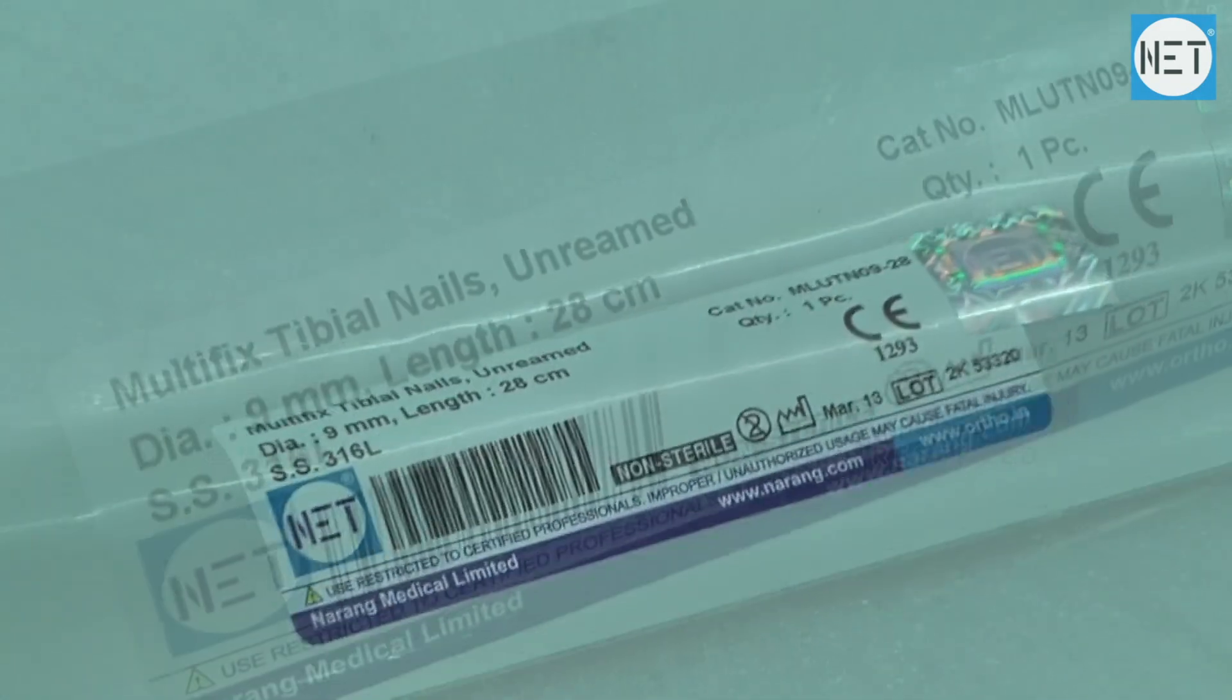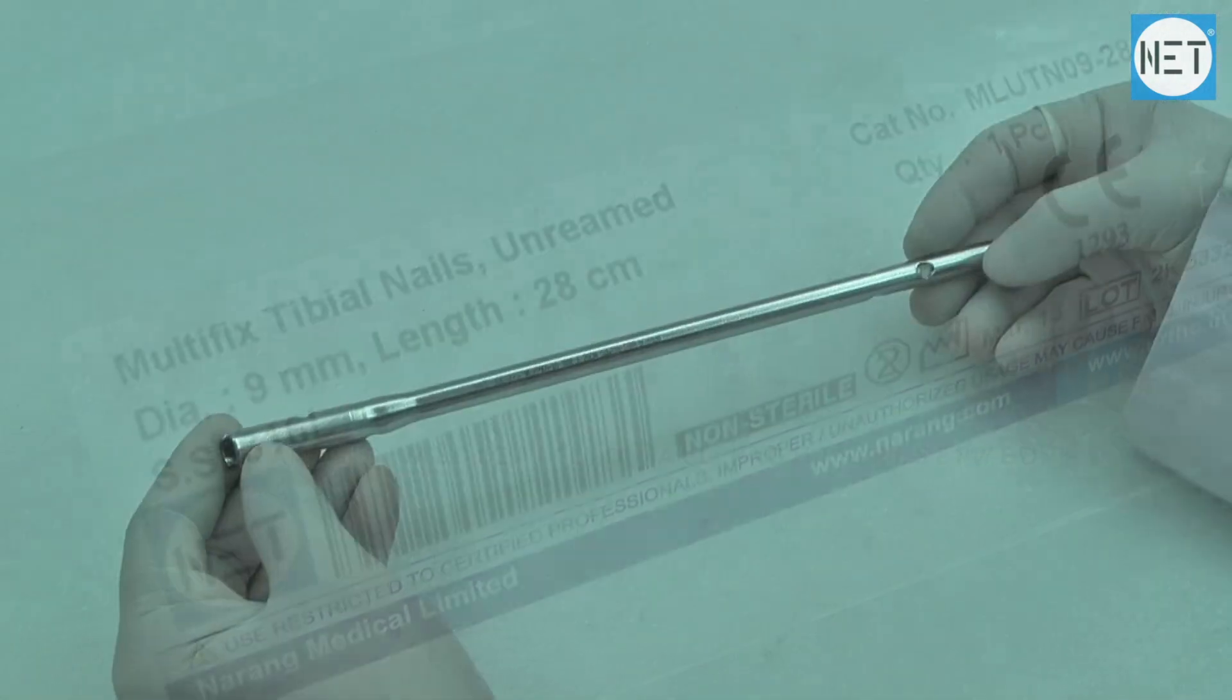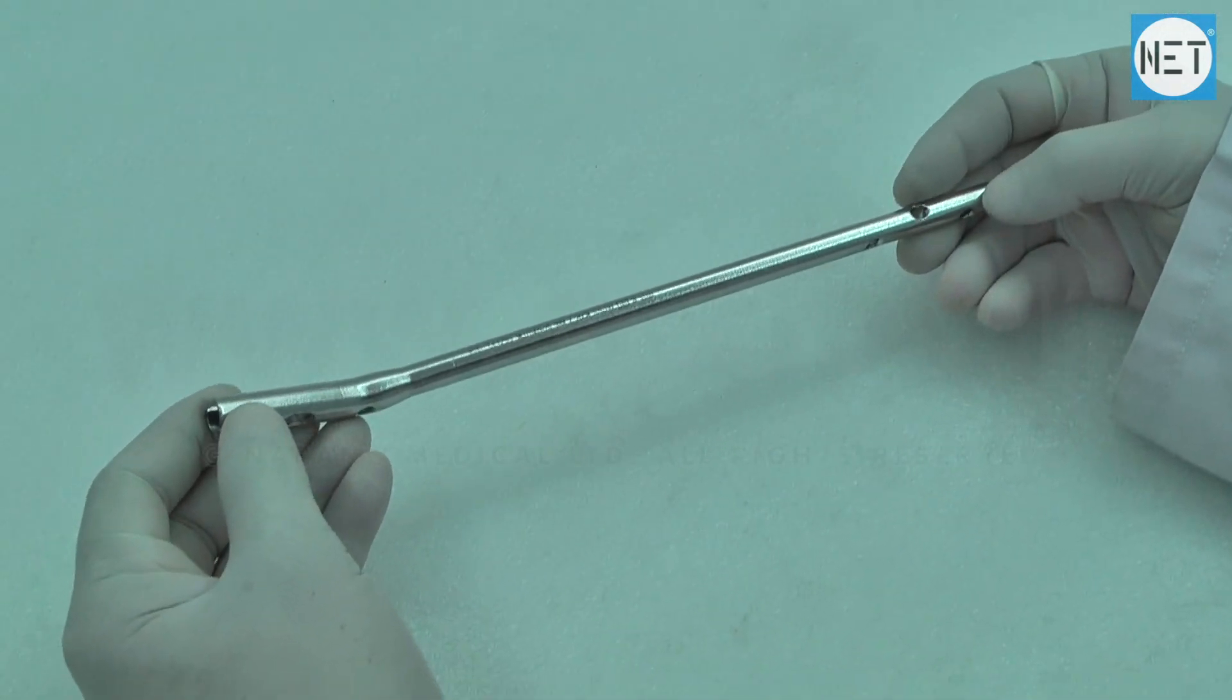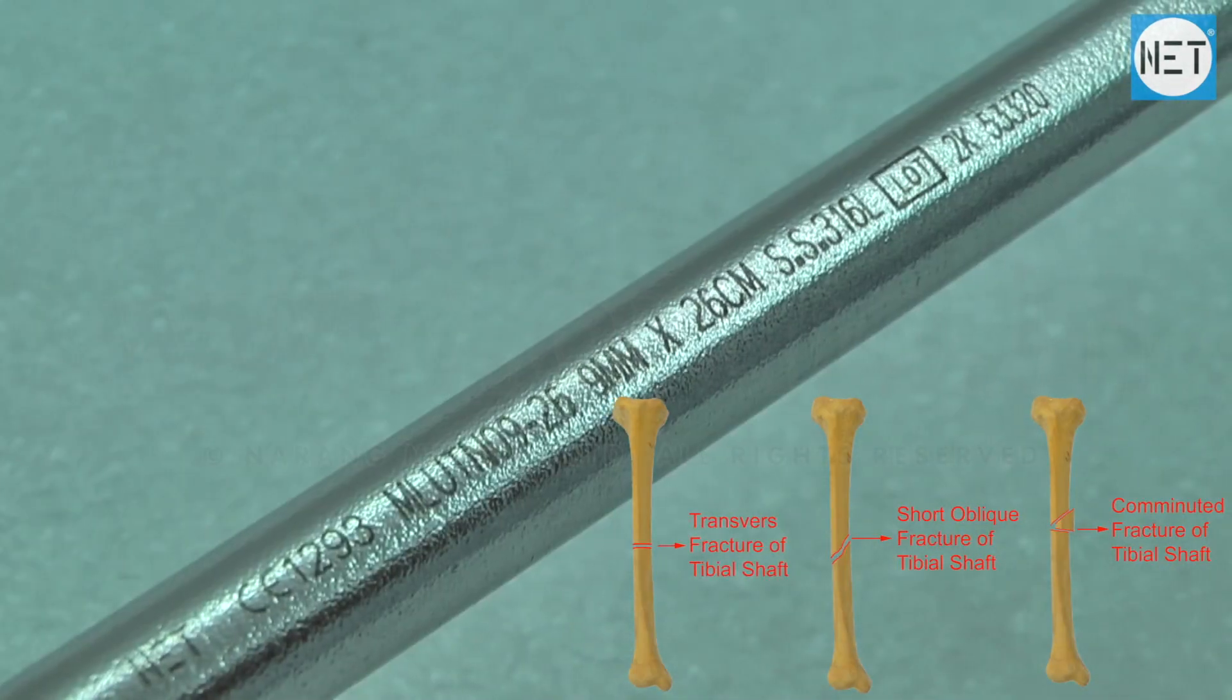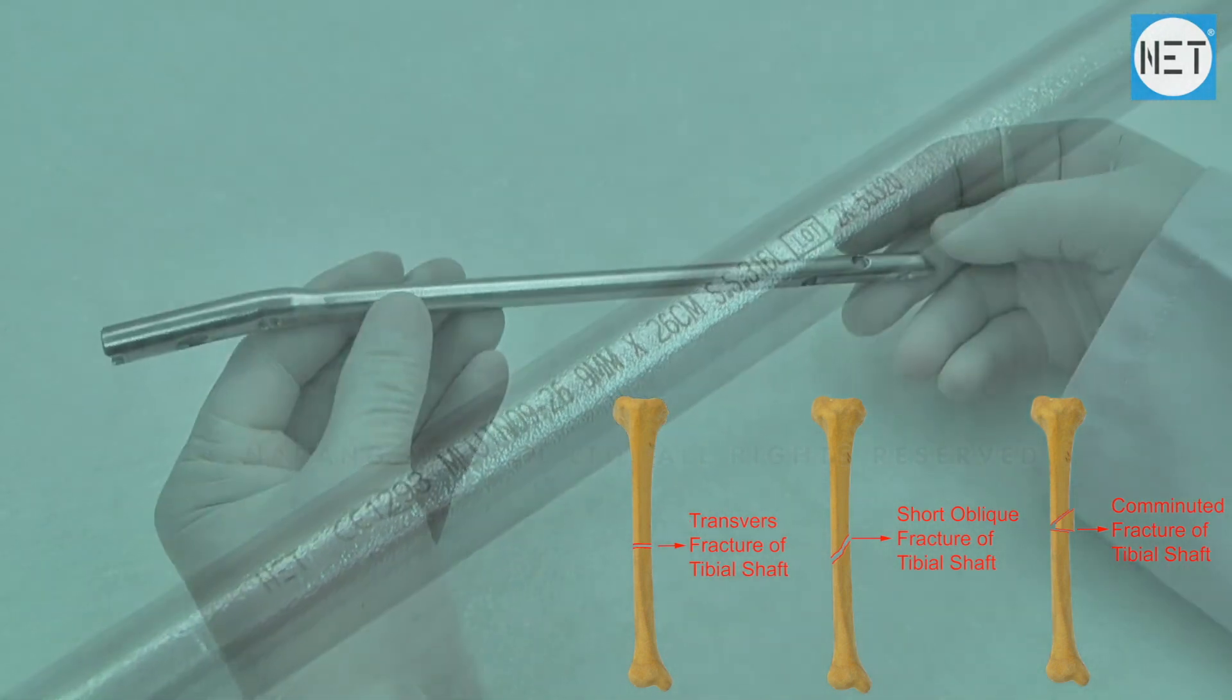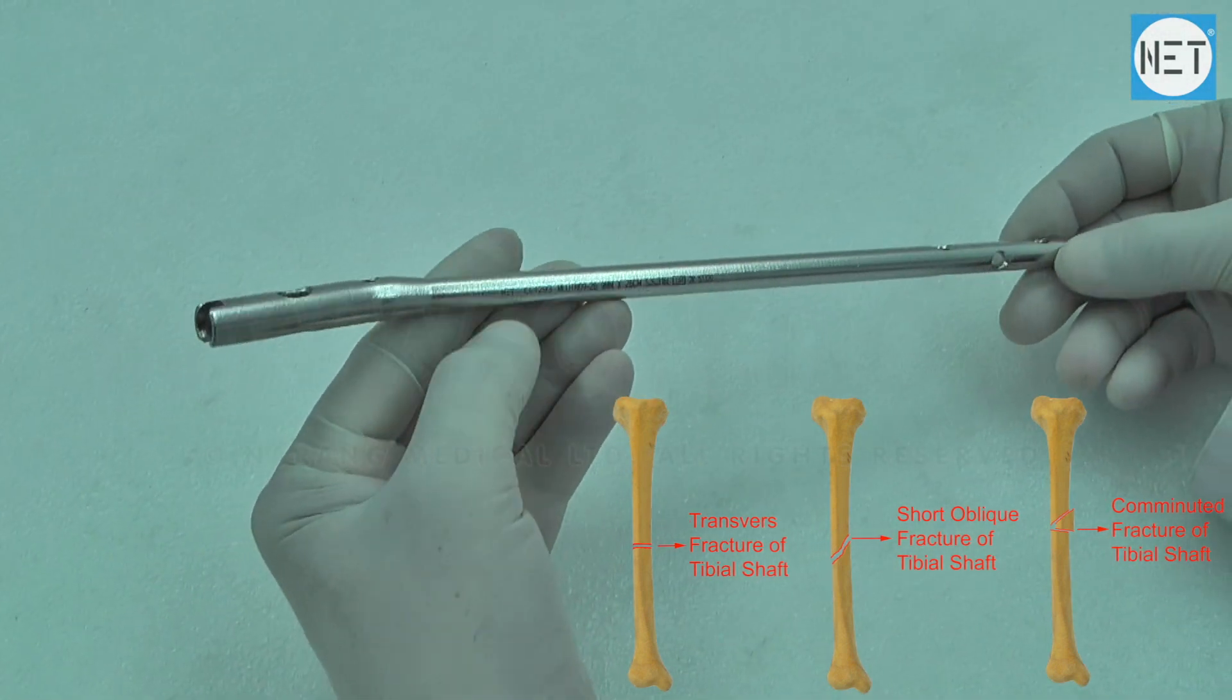Knit brand multi-fix tibial nails un-ringed dynamic hole. These nails are intended for fixation of open and closed, transverse, oblique, spiral, segmental and comminuted fractures of tibial shaft.